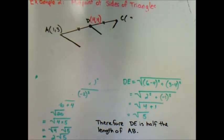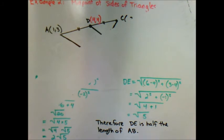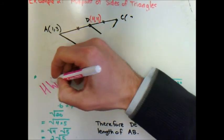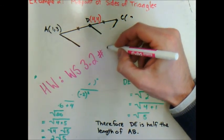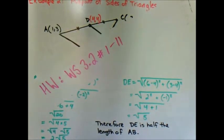That concludes Lesson 3.2. We used the midpoint, length, and slope formulas to verify properties of specific triangles. Key results: the centroid divides each median into two parts with one part twice the length of the other (2:1 ratio), and the line segment joining the midpoints of two sides of a triangle is parallel to the third side and half its length. Homework is worksheet 3.2, numbers 1 through 11.